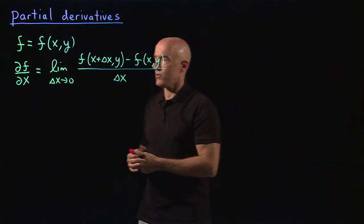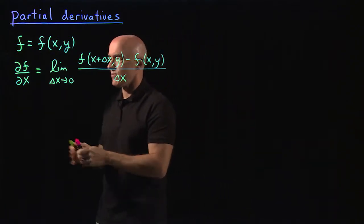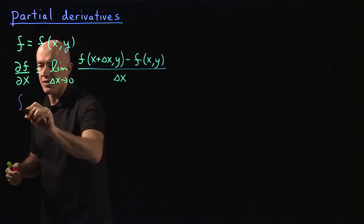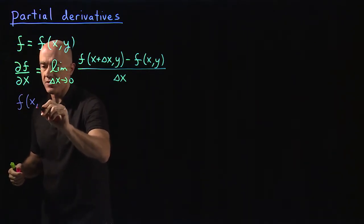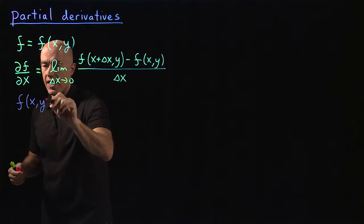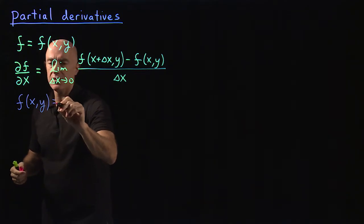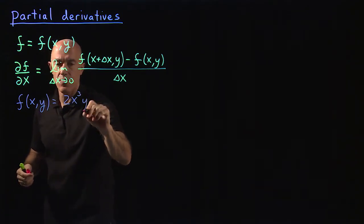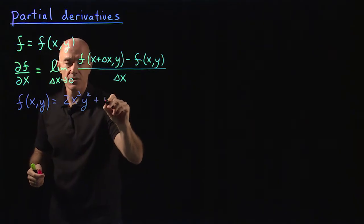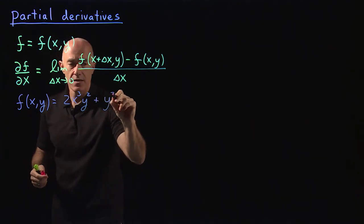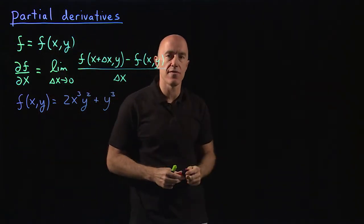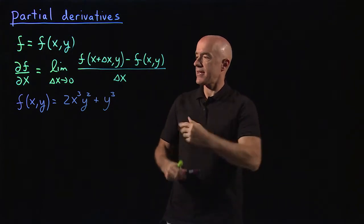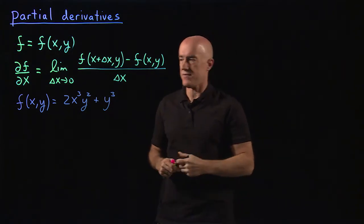It's easy to look at an example. Let's say f of (x, y) equals 2x cubed y squared plus y cubed — a function of x and y. So let's calculate the partial derivatives.